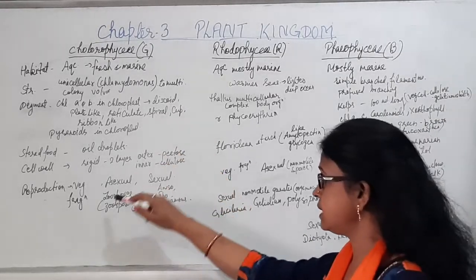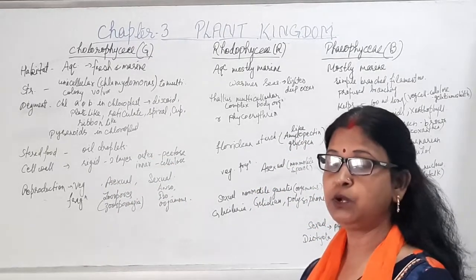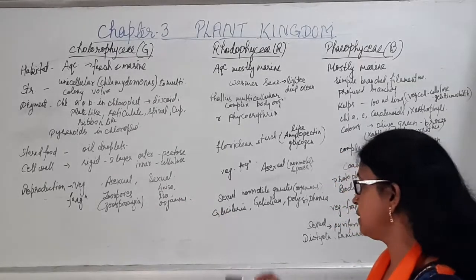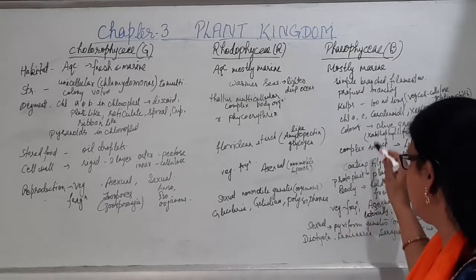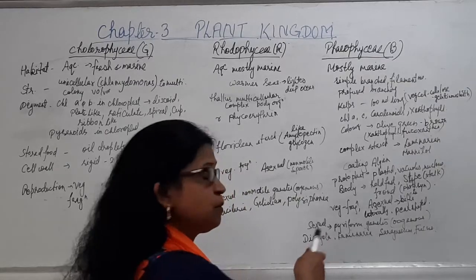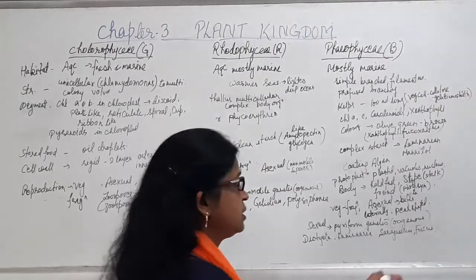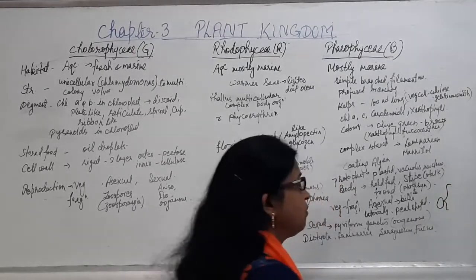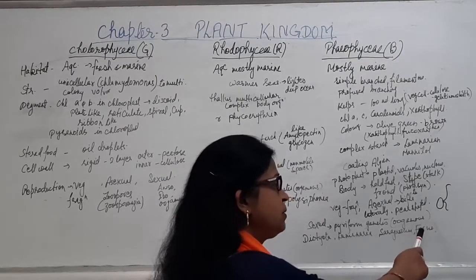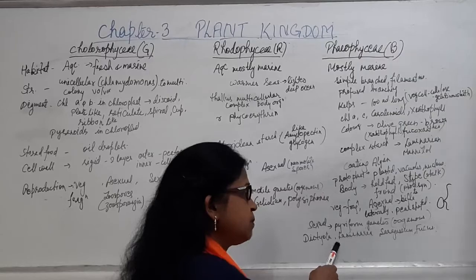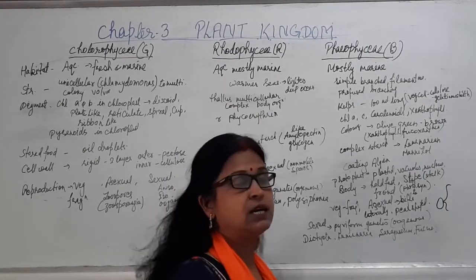Some examples of Rhodophyceae include Polysiphonia, Gelidium, and Gracilaria, among a wide range of species. In Phaeophyceae, sexual reproduction takes place by oogamy and here the gametes are biflagellate — the spores have two flagella, one bigger and one smaller. Members of Phaeophyceae include Ectocarpus, Laminaria, Sargassum, Fucus, etc., and kelps are well known among them.